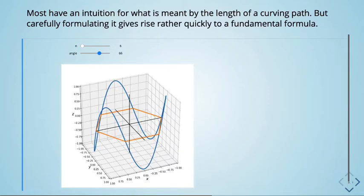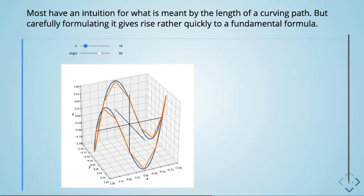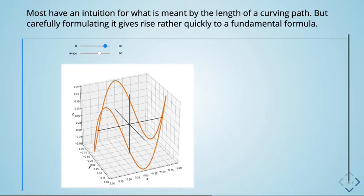We find estimates in the discrete case, improve them by increasing the number of sample points, and then take a limit — that's the magic of calculus. As the number of sample points increases, it becomes indistinguishable from the curve. The limit of that sum, if it converges, we call arc length. Once you hear 'limit of a sum,' you know it's going to be an integral.